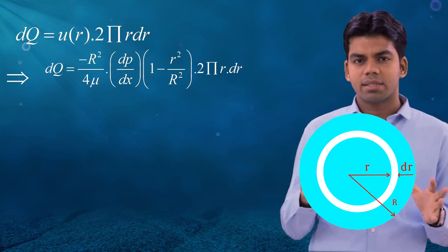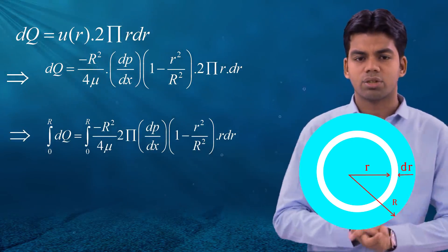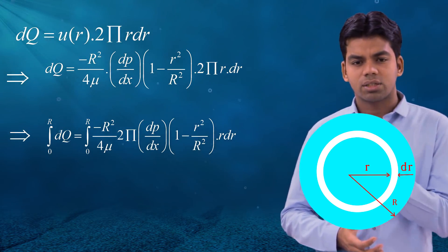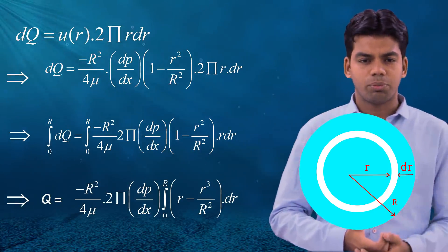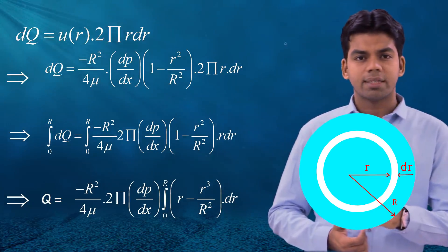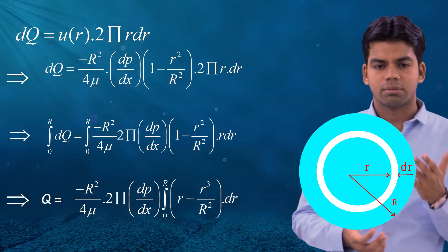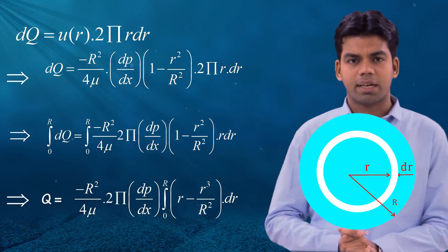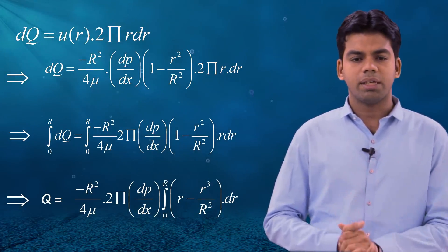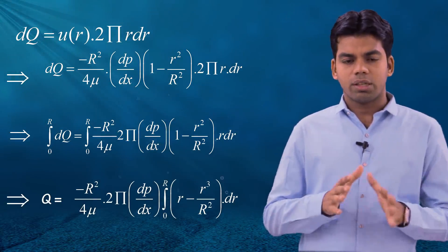To get the complete discharge, we integrate dq from 0 to R. So Q = −(R²/4μ) × 2π × (dp/dx) × ∫₀ᴿ (1 − r²/R²) r dr. Expanding inside the integral gives ∫₀ᴿ (r − r³/R²) dr.